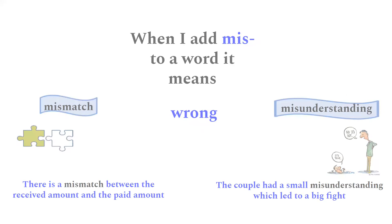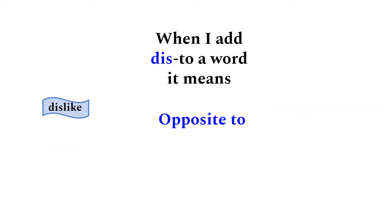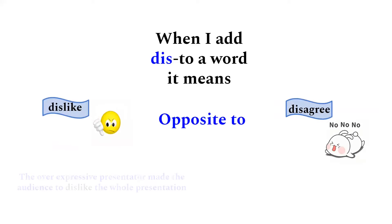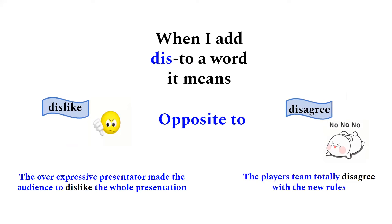When we add the prefix 'dis' to a word, it means 'opposite to' — for example, 'dislike' means opposite to like, and 'disagree' means opposite to agree. The over-expressive presenter caused the audience to be distracted during the whole presentation. The player's team totally disagreed with the new rules.